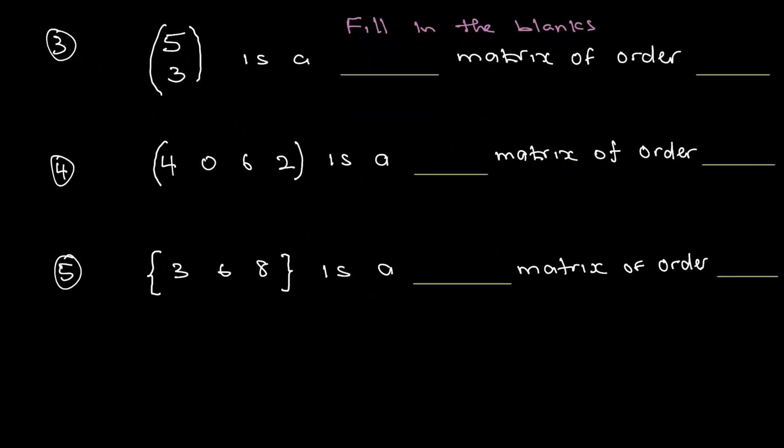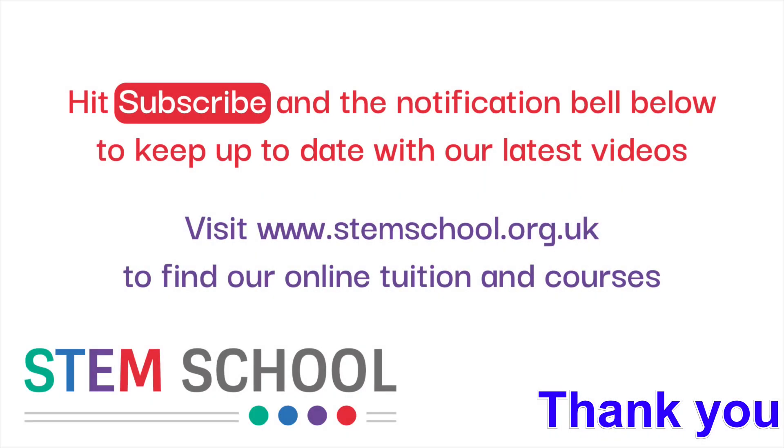Question number three. Pause and answer this question by filling in the blanks. Question number four is a column matrix of order two by one. Question number five is a row matrix of order one by four. We haven't got a bracket, we've got curly brackets, and that indicates a column matrix of order three by one.